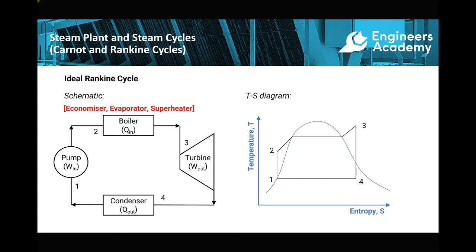An alternative is the ideal Rankine cycle. Moving from position one to two we have a pump instead of a compressor, because we have water at both positions — we pump water whereas we compress steam. From two to three is our boiler, which can be made up of an economiser, an evaporator, and a superheater. From three to four is our turbine where we expand the steam and produce mechanical work, and from four to one is our condenser which turns the steam back into water.